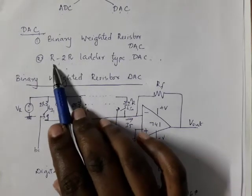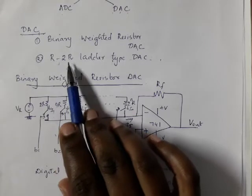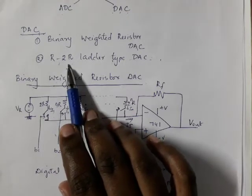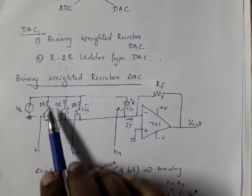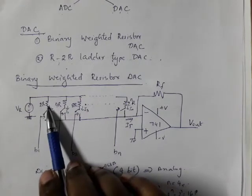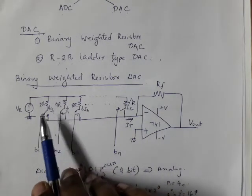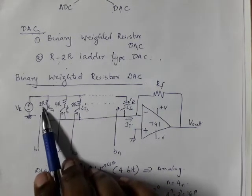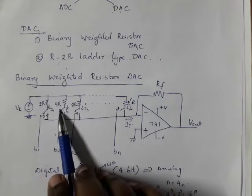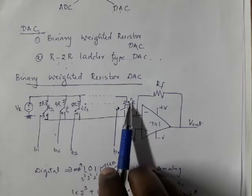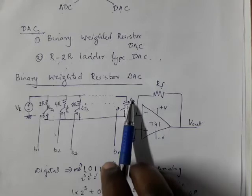In R2R ladder type DAC, here we use only 1K and 2K resistor combinations. We use 1K, 1K, 1K resistors and 2K resistors — only two values of resistors.